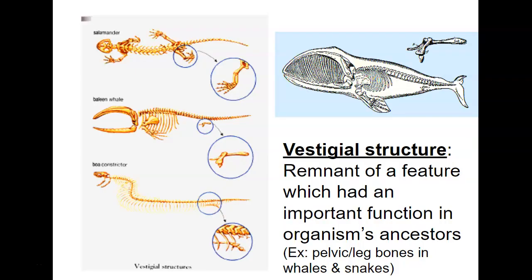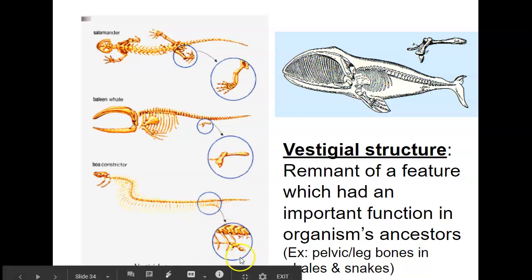Vestigial structures are remnants that had an important function once upon a time, but don't now. In the whale picture, you can see tiny pelvic leg bones. Snakes, even though they clearly don't have legs, have vestigial structures suggesting that once upon a time maybe they did, similar to a salamander.